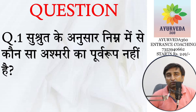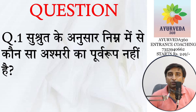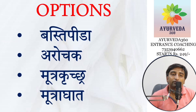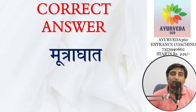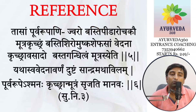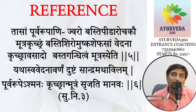I'll translate all the questions into English for those who attempted the English version. The first question is about Ashmari. The right answer is Moutra Ghata, because the other three options — Bastipida, Arochaka, and Moutra Krichra — can all be seen in the shloka. Bastipida, Arochakau, and Moutra Krichram are all three available in the beginning of the shloka.